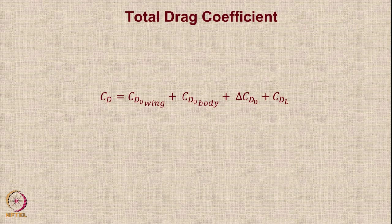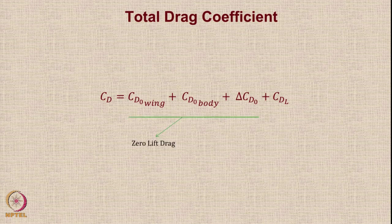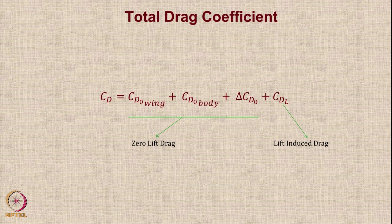The total drag coefficient for a transport can be assumed to be a summation of four components: CDO due to the wing, second due to the body, third is the delta CDO because of various other parameters. The combination of these three is called the zero-lift drag coefficient. Then we have the delta CDL, which is the lift-induced drag. When you calculate the accurate value of CDO for the wing body and delta CDO for the zero-lift drag and also the lift-induced drag, then you can get the value of CD.